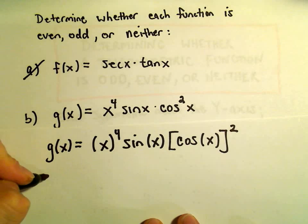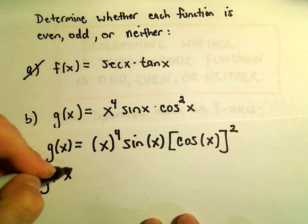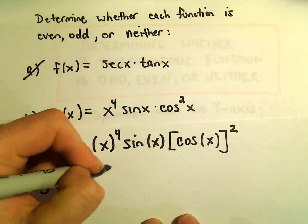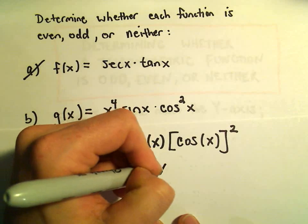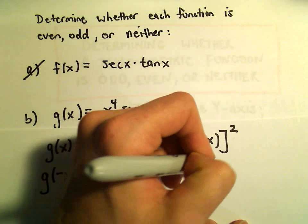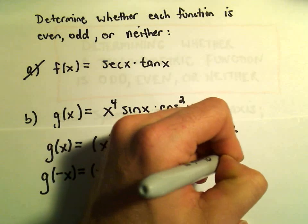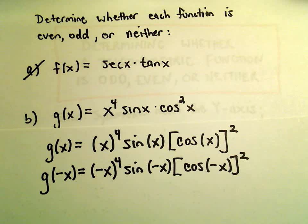So now I'm going to think about g of negative x. That's just negative x to the fourth, sine of negative x, cosine of negative x squared. And now I just have to simplify things down.